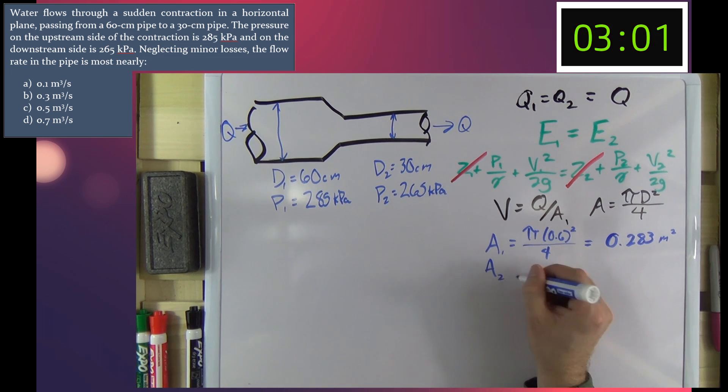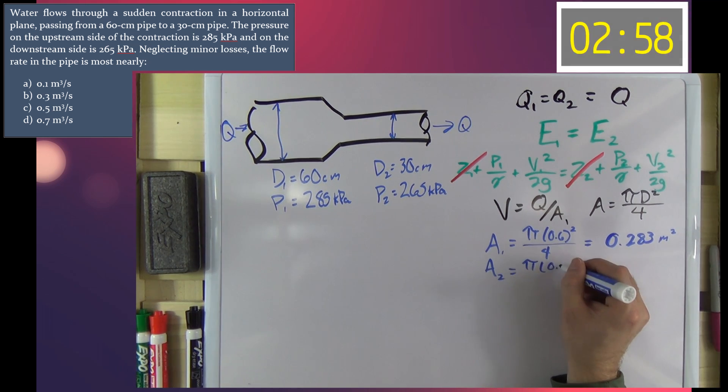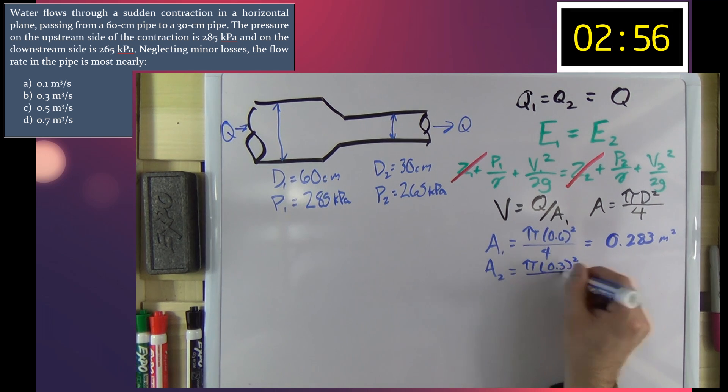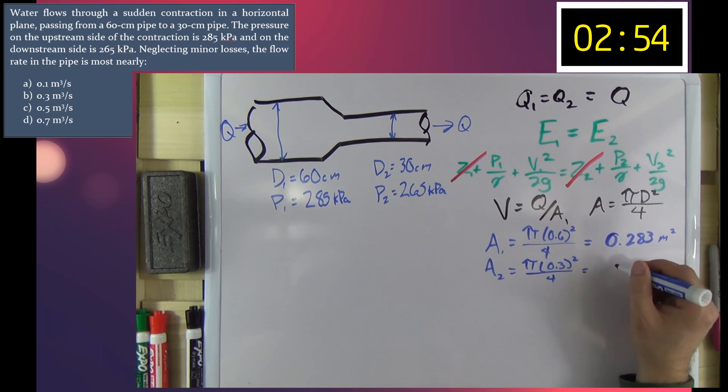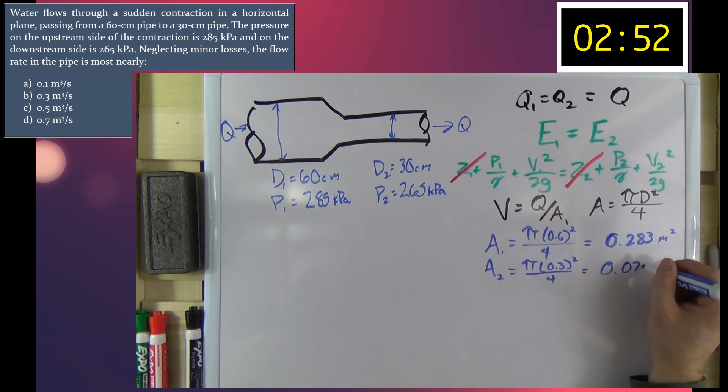And area 2 is equal to pi times 0.3 squared over 4 which is equal to 0.071 square meters.